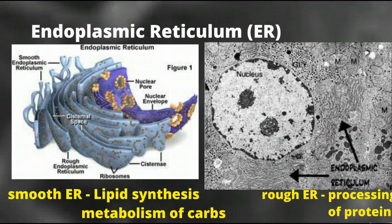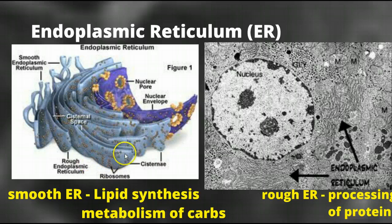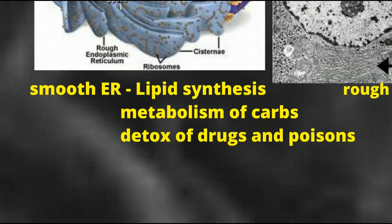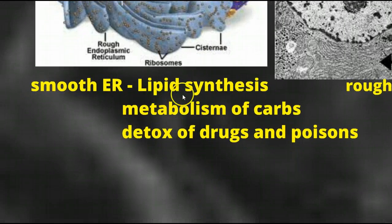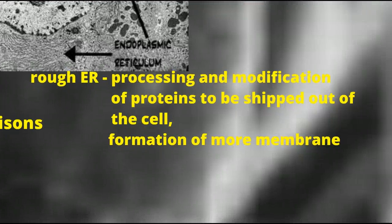What are these ribosomes attached to? The endoplasmic reticulum. The endoplasmic reticulum is just an extension of the nuclear membrane. The areas where there are ribosomes attached is referred to as rough ER, or rough endoplasmic reticulum, and the areas where there are no ribosomes attached is called smooth ER, or smooth endoplasmic reticulum. The smooth ER is for the synthesis of lipids, the metabolism of carbohydrates, and the detox of drugs and poisons. The rough ER is for the processing and modifications of proteins to be shipped out of the cell, and the formation of more membrane.